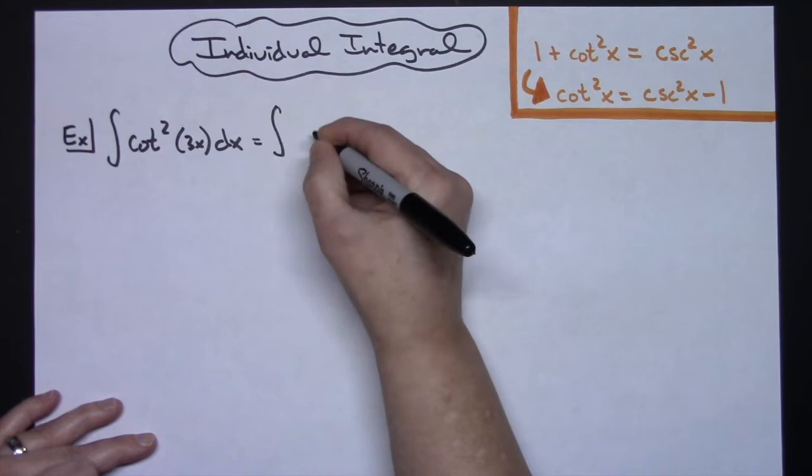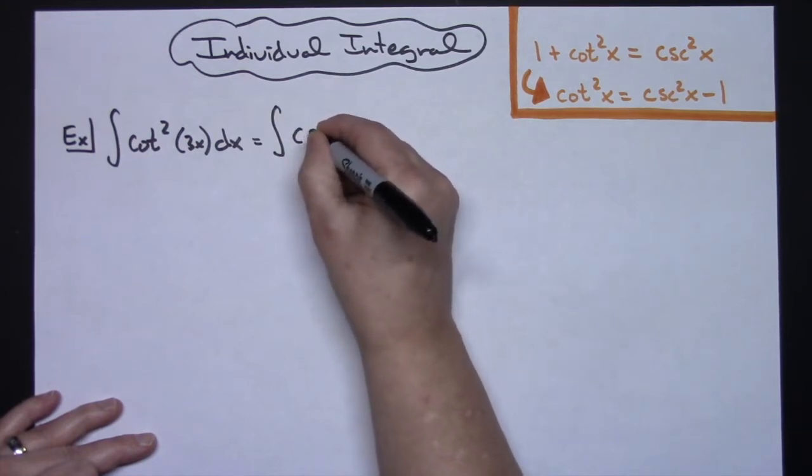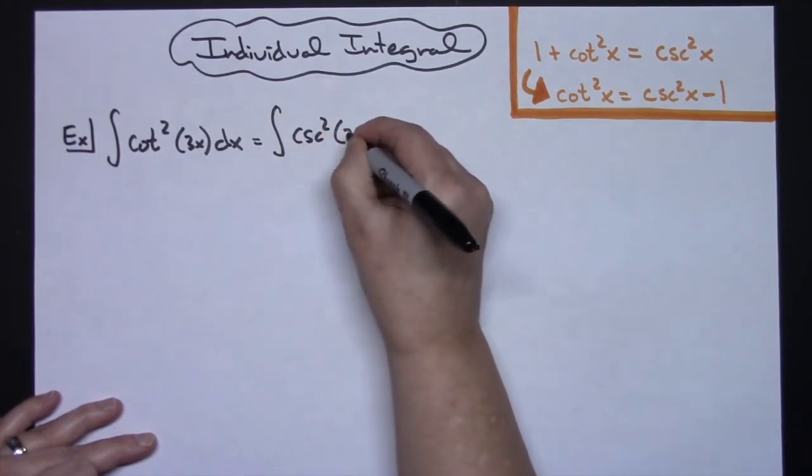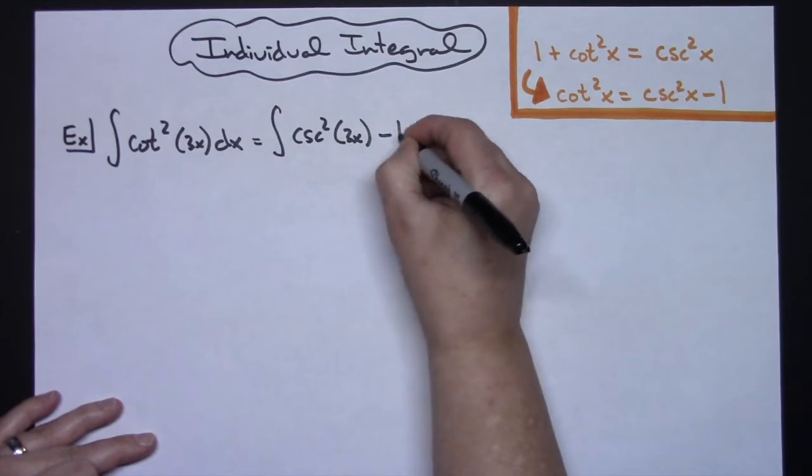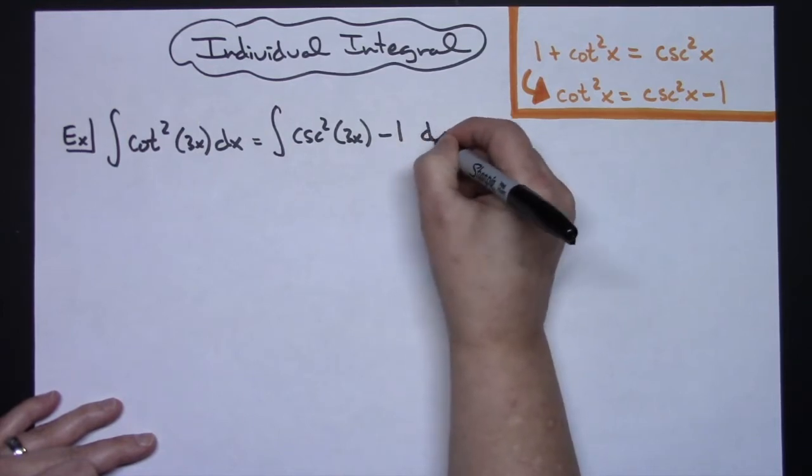So we're going to rewrite this as cosecant squared of 3x minus 1, and then dx.